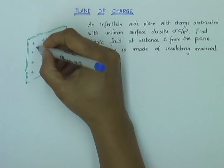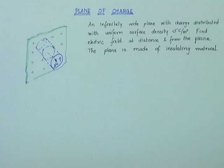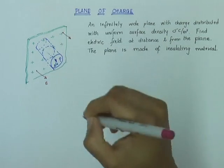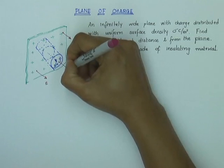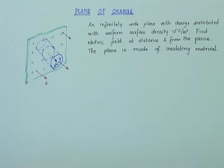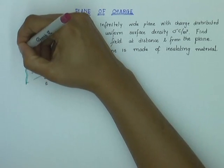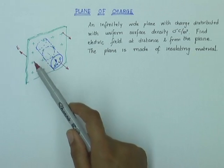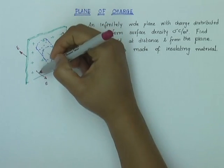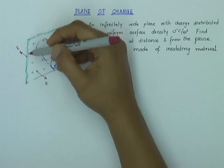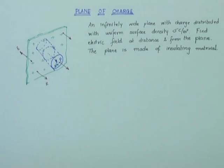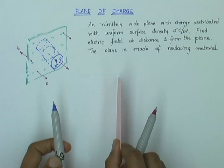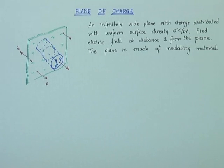Now, what is the direction of electric field? Since the charge is uniformly distributed, the electric field acts perpendicular to the plane everywhere. So electric field is going to be parallel to the curved sides of the cylinder and perpendicular to the ends of the cylinder. The electric field on both sides acts away from the positive charge — perpendicular in one direction on this side and perpendicular in the other direction on the other side.